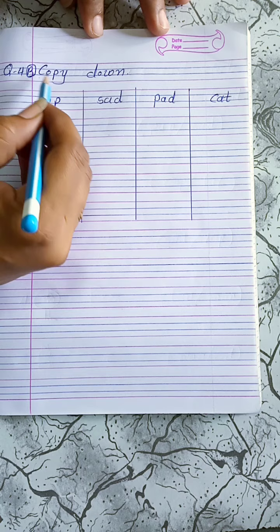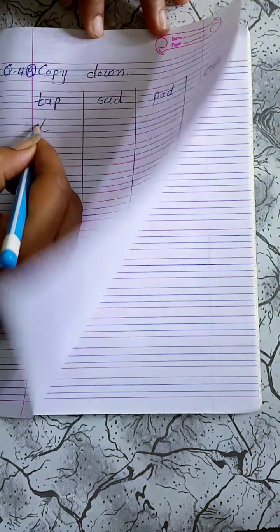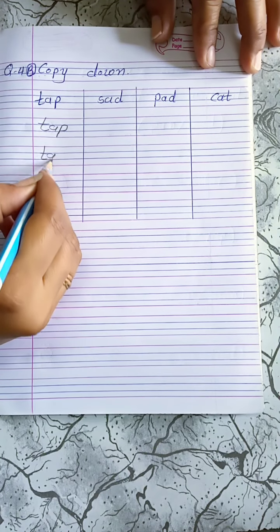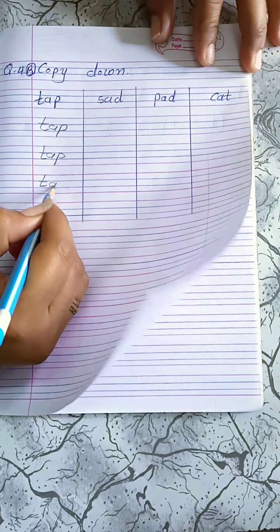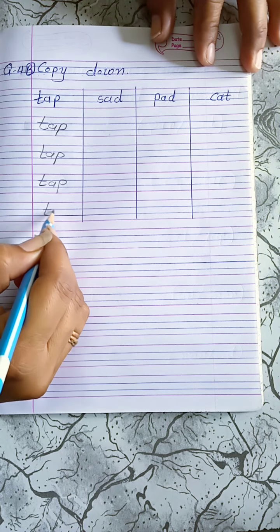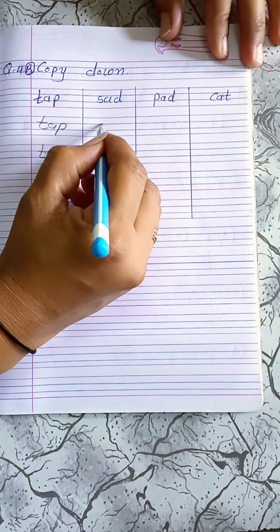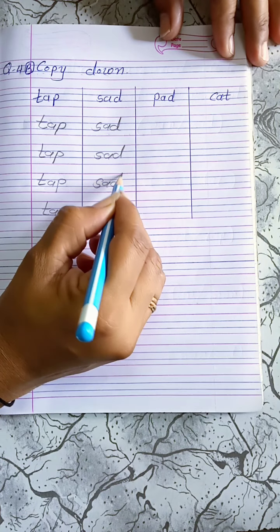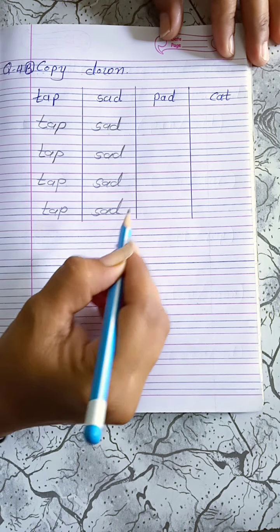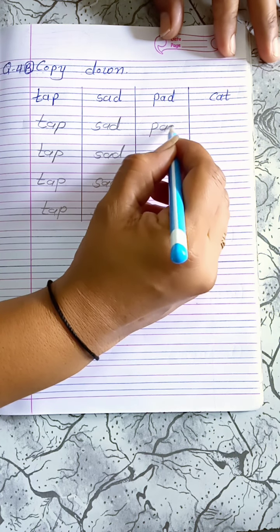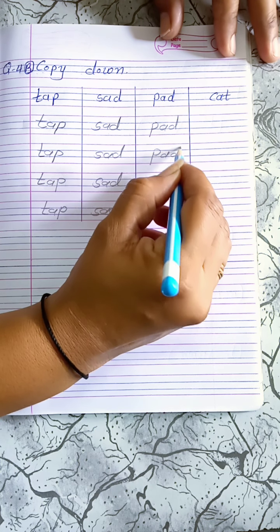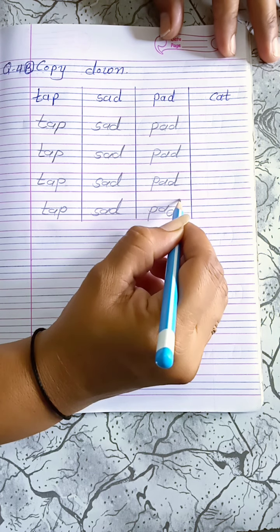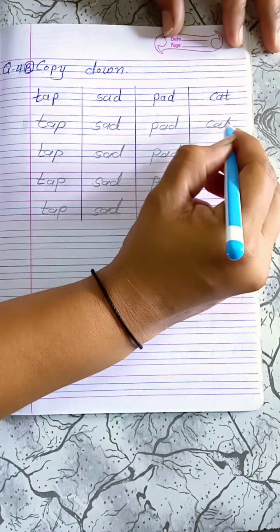Question 4B: Copy down. T-A-P, tap. T-A-P, tap. T-A-P, tap. P-A-D, pad. P-A-D, pad. P-A-D, pad. P-A-D, pad.